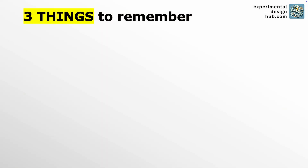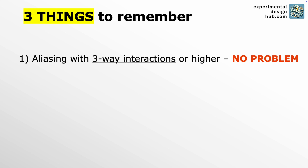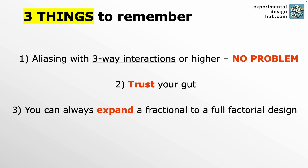Three things to remember from this video. First, aliasing with three-way interactions or higher is not a problem — those higher-order interactions usually don't have practical relevance because their effects are so small. Second, if you're trying to interpret aliased effects, trust your gut — you're usually right. And third, if you're unsure, run the missing fraction of your design plan and get the unambiguous result.